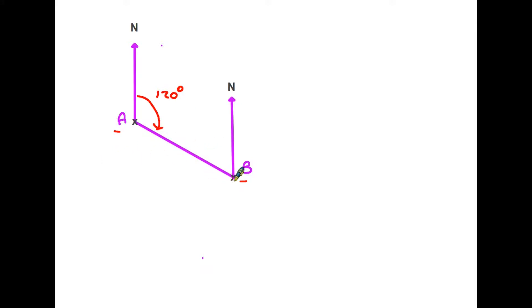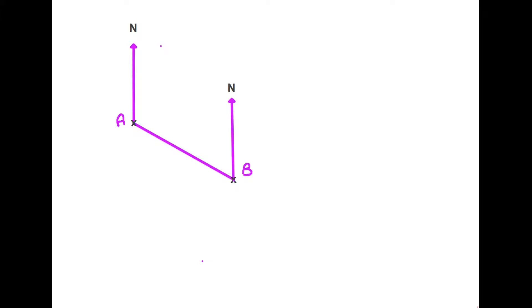Now let's look at a slightly different situation. Let's consider what would happen if we were asked to find the direction of A from B. So in this case we are starting at the point B. The method is exactly the same - we draw a north line.